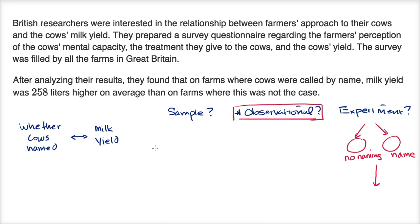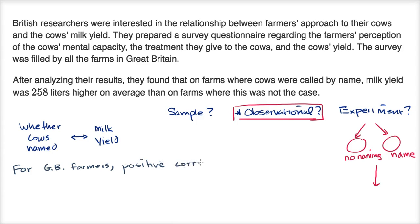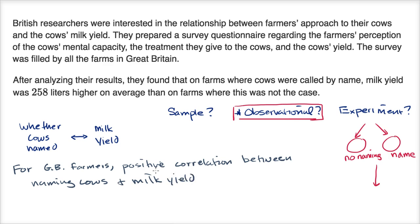What can we conclude here? They're telling us that when the cows were named, there was a 258 liter higher yield on average. The conclusion we can strictly make is that for farmers in Great Britain, there is a positive correlation between whether cows are named and the milk yield. For Great Britain farmers, we have a positive correlation between naming cows and milk yield. That's pretty much what we can say here.